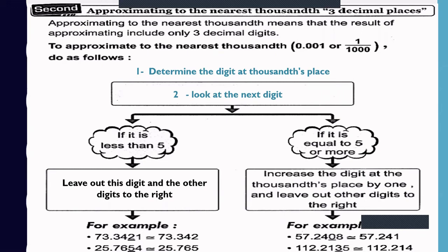If the next digit is less than 5, leave out that digit and all digits to the right. For example, 73.3421 — the thousandths digit is 2, the next digit is 1, less than 5, so cancel — approximately 73.342. Another example: 25.7654 — the thousandths digit is 5, the next digit is 4, less than 5, so we leave it out — approximately 25.765.